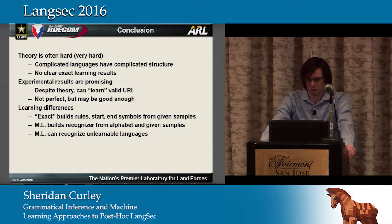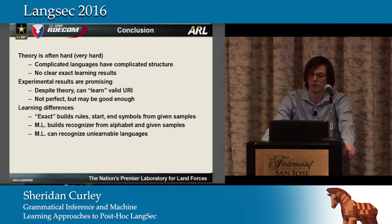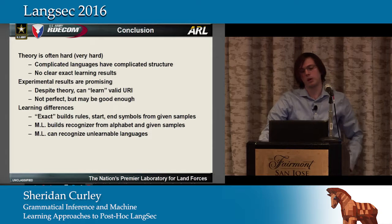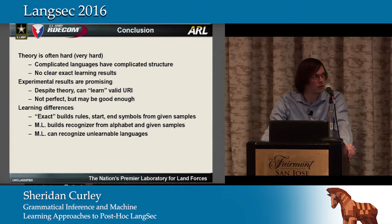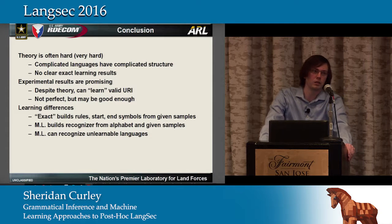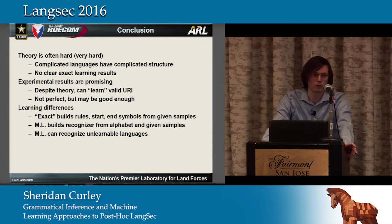To bring the whole talk together: theory is often hard — usually NP-hard or NP-complete when learning grammars from positive examples — and there are no clear exact learning results. However, we have good experimental results. It seems quite possible to just throw enough computational power at the problem, give it valid URIs, and get something that actually recognizes URIs going forward. It's not perfect and certainly not a long-term solution, especially in the realm of LangSec, but it may be good enough to convince people who are otherwise not willing to adopt more secure parsers to tack this on in the meantime to help secure things a little bit more.